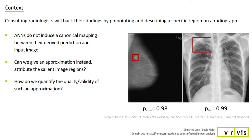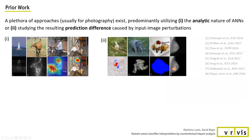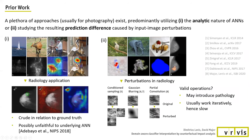Since neural networks do not induce a canonical mapping between the prediction and the input image, can we give an approximation instead whose validity we can test and quantify? A plethora of approaches have been presented addressing these issues, which we can partition crudely into classes: direct approaches utilize the assumed analytic nature and architecture of a network, while reference-based methods treat the network as a black box and assess the region's influence by counterfactual reasoning — how would the prediction change if the region's information were missing? However, both fall short when introduced into radiology workflows directly.